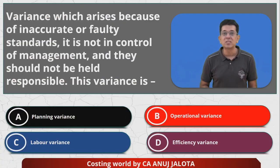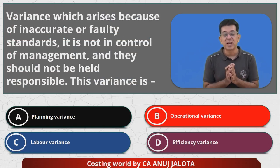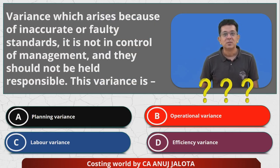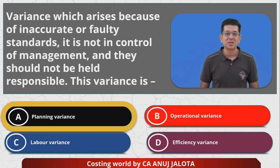So therefore the question was something like this. Which variance is not in the hands of the management? So therefore answer should be A, planning variance. Let's try to see the correct answer. So the correct answer in this case should be A, that is nothing but the planning variance. Thank you.